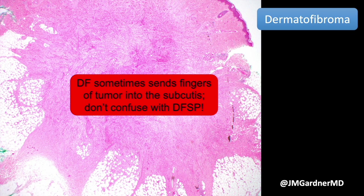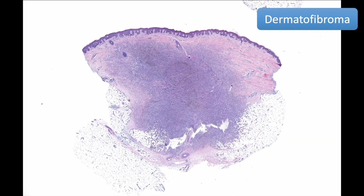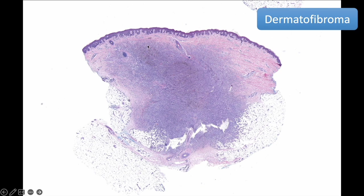Don't be alarmed if you see a dermatofibroma that otherwise looks perfect for DF but extends deep into the fat; they can even be found in deep muscle on rare occasions. Here's another example of a cellular DF extending into the fat. From low power you can see the fat cells are variable in size and shape due to fat necrosis. There's nice epidermal hyperplasia with tabling and flattening of the rete, and there's the Grenz zone.